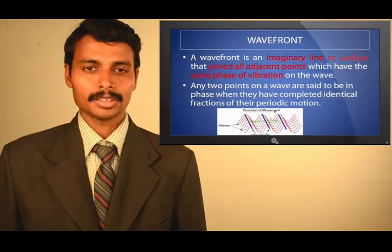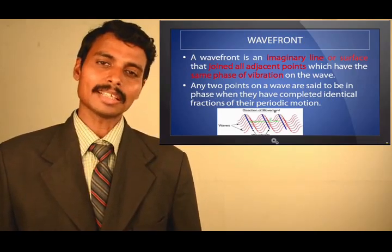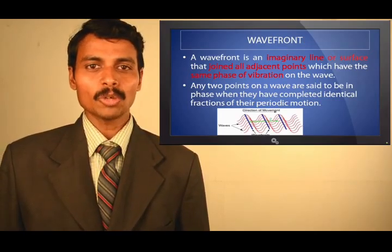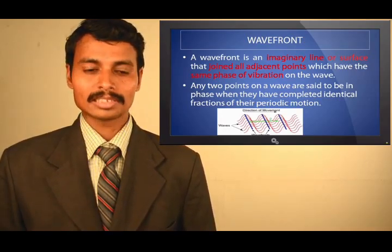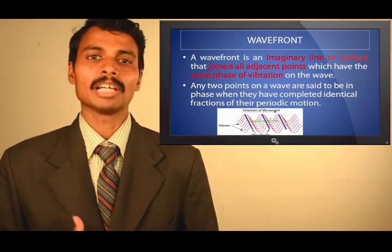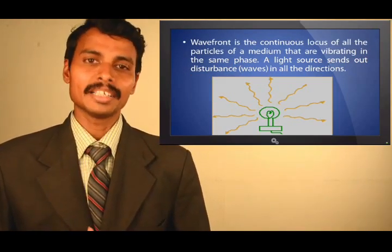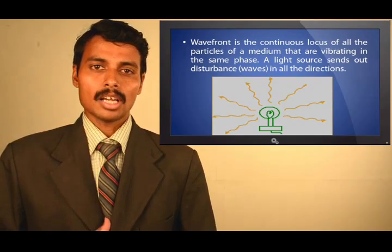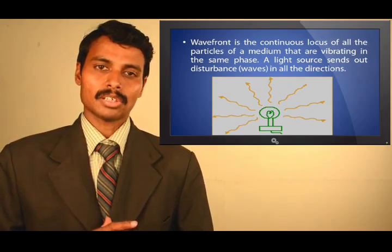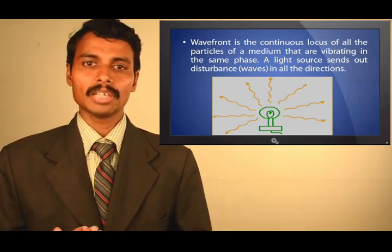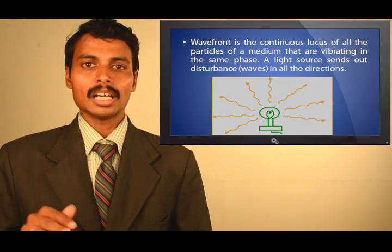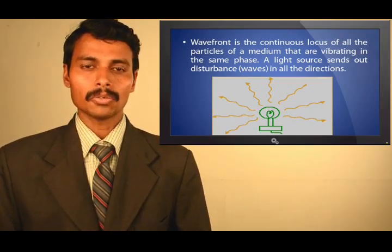The next topic is wavefront. As electromagnetic waves are transmitted from the transmitter to the receiver, it is important to understand what a wavefront is. Wavefront is defined as an imaginary line or surface that joins all adjacent points which have the same phase of vibrations. When waves come out of the transmitting antenna, they maintain the same phase. The diagram in the slide clearly shows the adjacent points of the same phase.